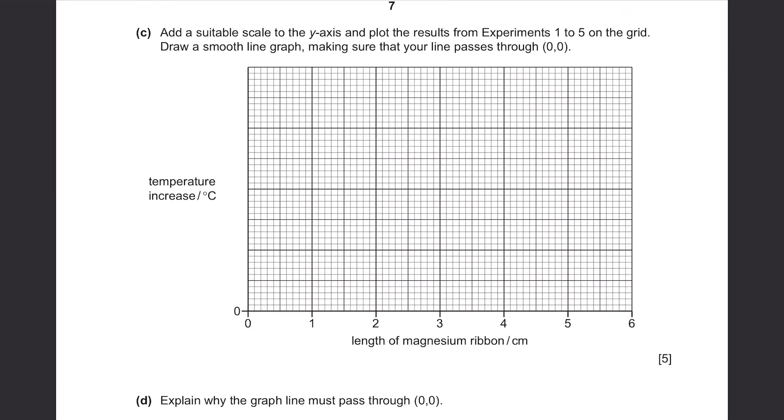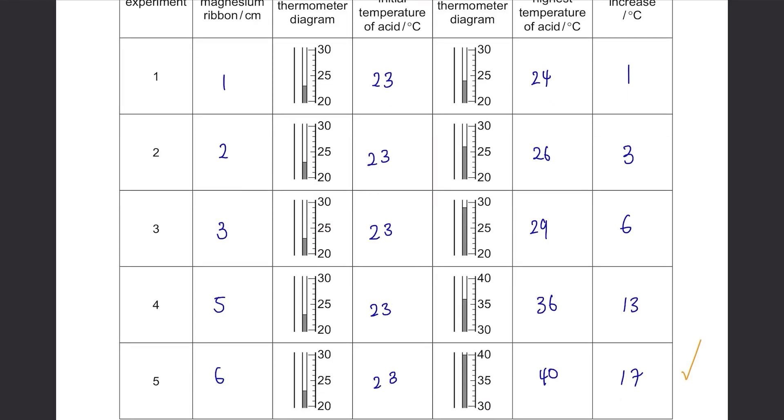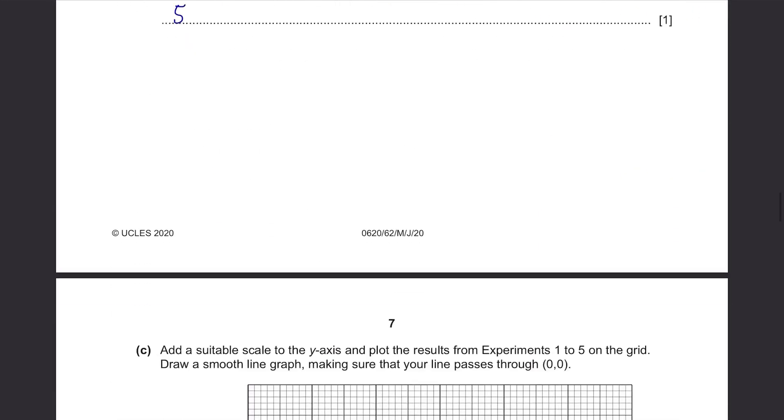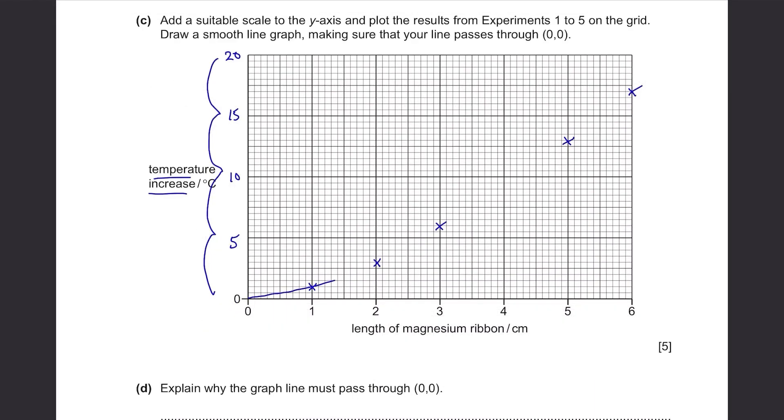Part C: Add a suitable scale to the y-axis and plot the results from experiments 1 to 5 on the grid. Draw a smooth line, making sure that your line passes through (0,0). The scale of x-axis is already here, so we have to scale the y-axis. The y-axis is temperature increase. Let's see the range of temperature increase that we need to record. They are from 1 to 17. Since we have four big boxes here, let's set one big box as 5. So it's from 0, 5, 10, 15, 20. Then all you need to do is just plot the graph. Here's the graph. It looks pretty smooth and it passes through (0,0) as well. So it's done.